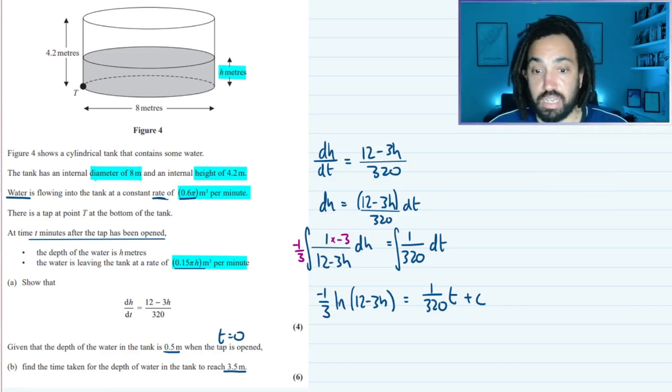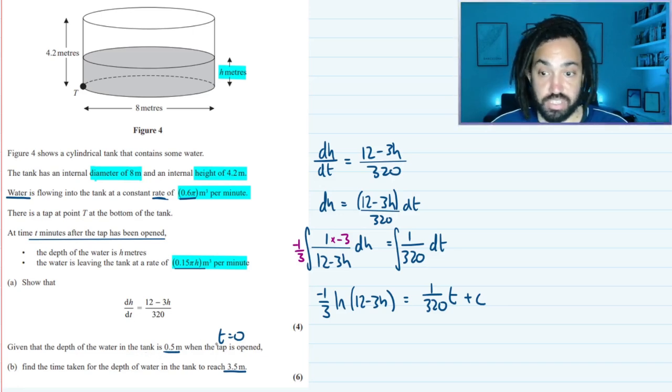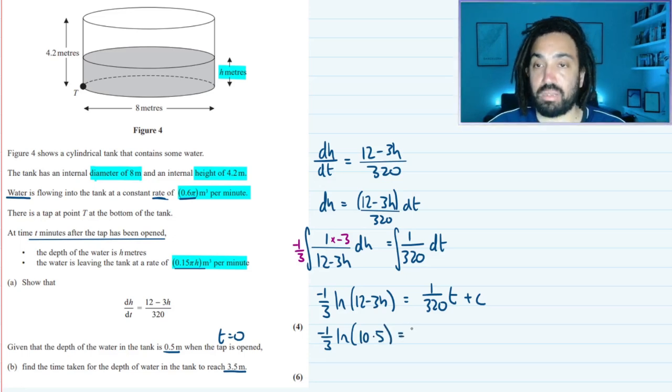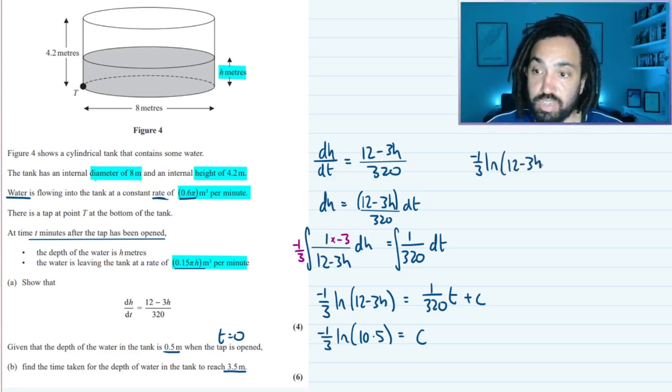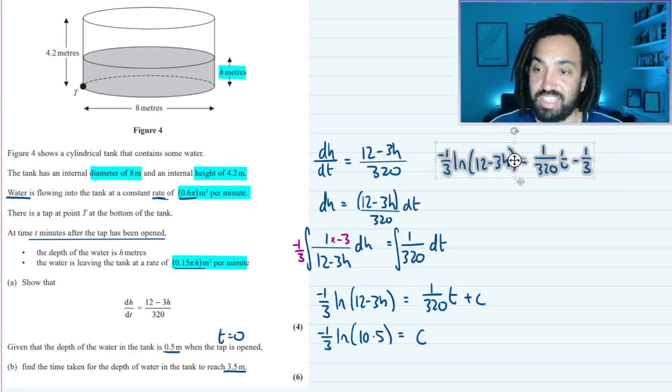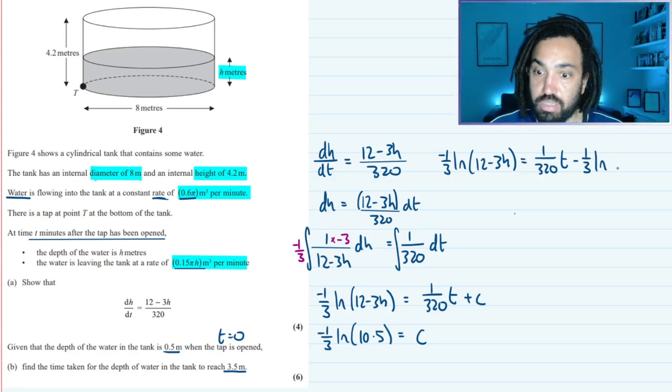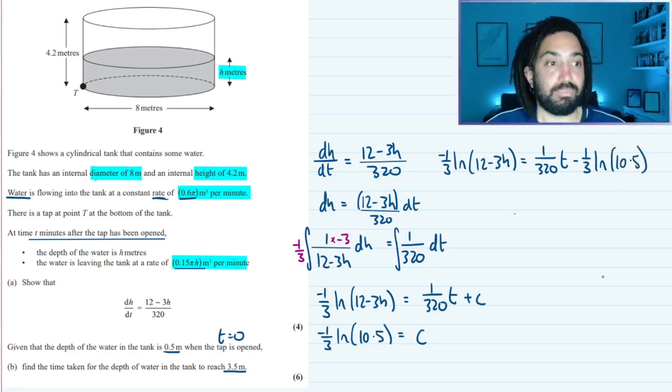And now we need to sub in our initial conditions. So we're told that the depth of the water in the tank, h is 0.5, so subbing in I get minus a third ln of, if h is 0.5 then this will give me 10.5. T is 0 so that just gives me c. Okay perfect. So going over here we can write our new equation as minus a third ln(12 - 3h) equals 1/320 t minus a third ln(10.5).